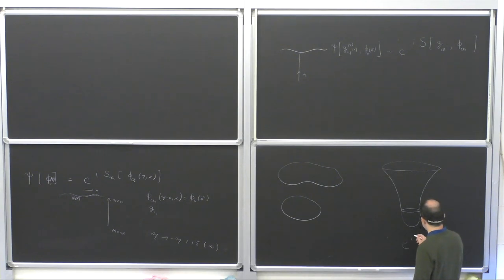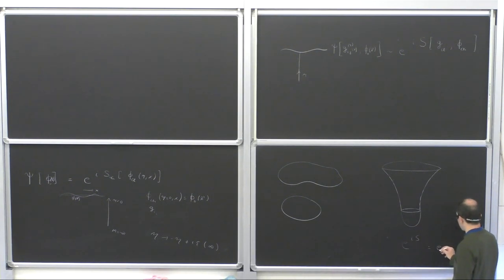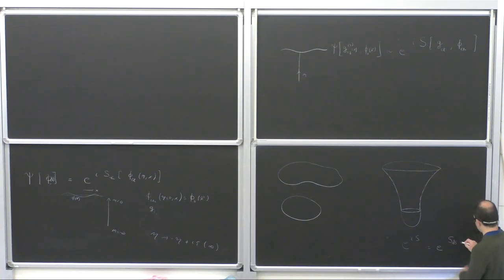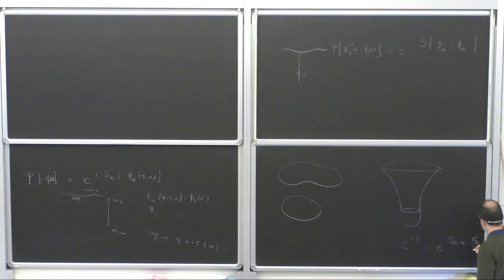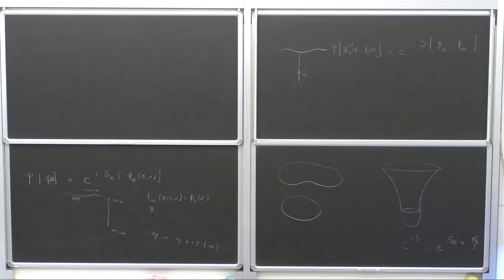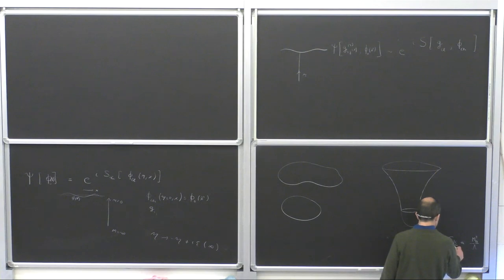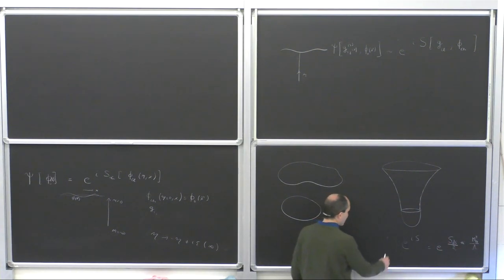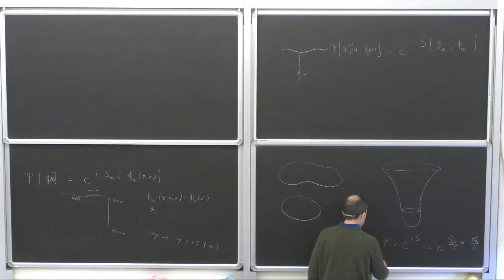If we evaluate the action in this case, we find that e^{iS} equals e to the de Sitter entropy — also equal, with factors of 4pi, to M_Planck^4 over lambda. So the wave function squared gives e to the de Sitter entropy. Let me be more precise: the de Sitter entropy equals the area of the de Sitter horizon divided by 4G_Newton. This is the area of the horizon for a static observer. There will be a horizon which is the maximal S^2 within the S^3 of the spatial directions.